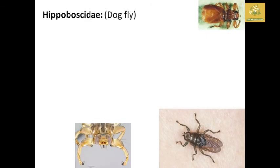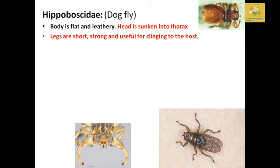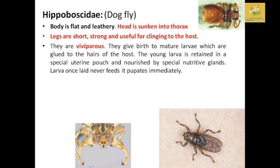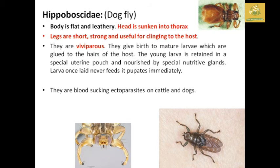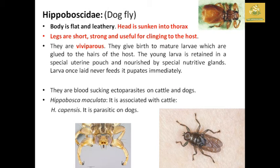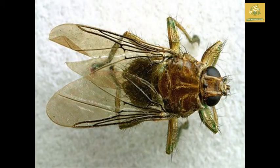Hippoboscidae — the dog fly. The body is flat and leathery. The head is anchored in the thorax. Legs are short and strong, useful for clinging onto the host. They are viviparous — they give birth to mature larvae which are glued to the hairs of the host. The young larva is retained in a special uterine pouch and nourished by a nutritive gland. The larva never feeds and pupates immediately on the host. They are blood-sucking ectoparasites on cattle and dogs. Scientific name: Hippobosca maculata on cattle, Hippobosca capensis on dogs.